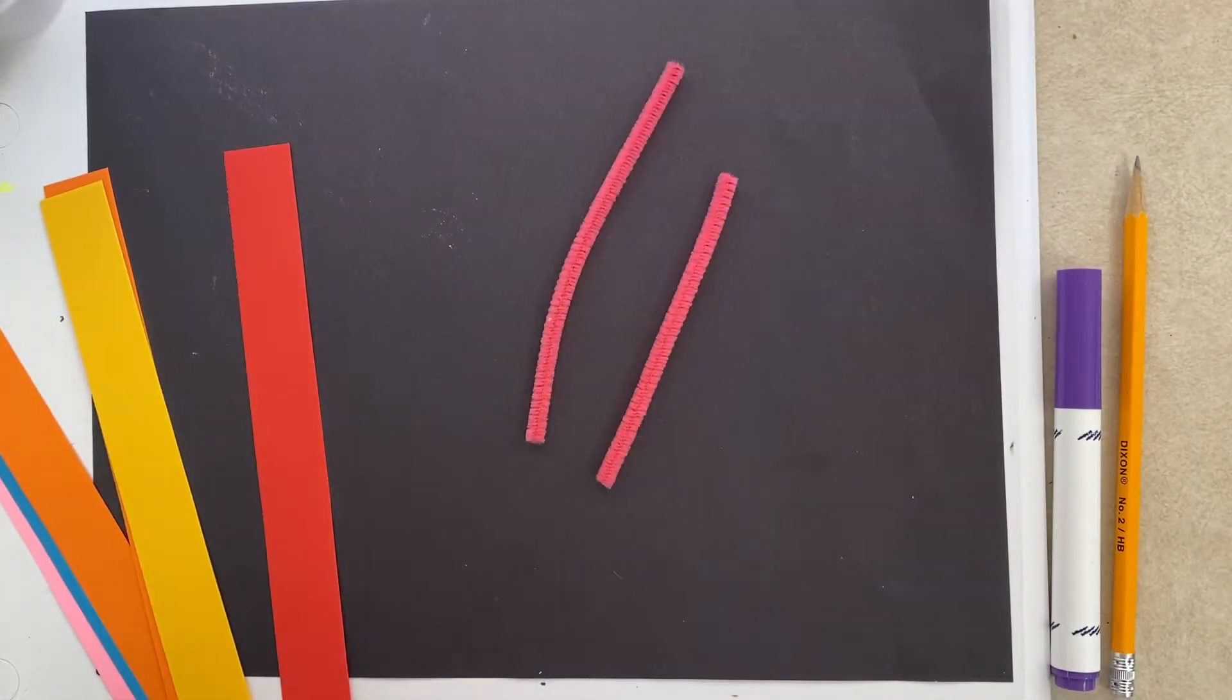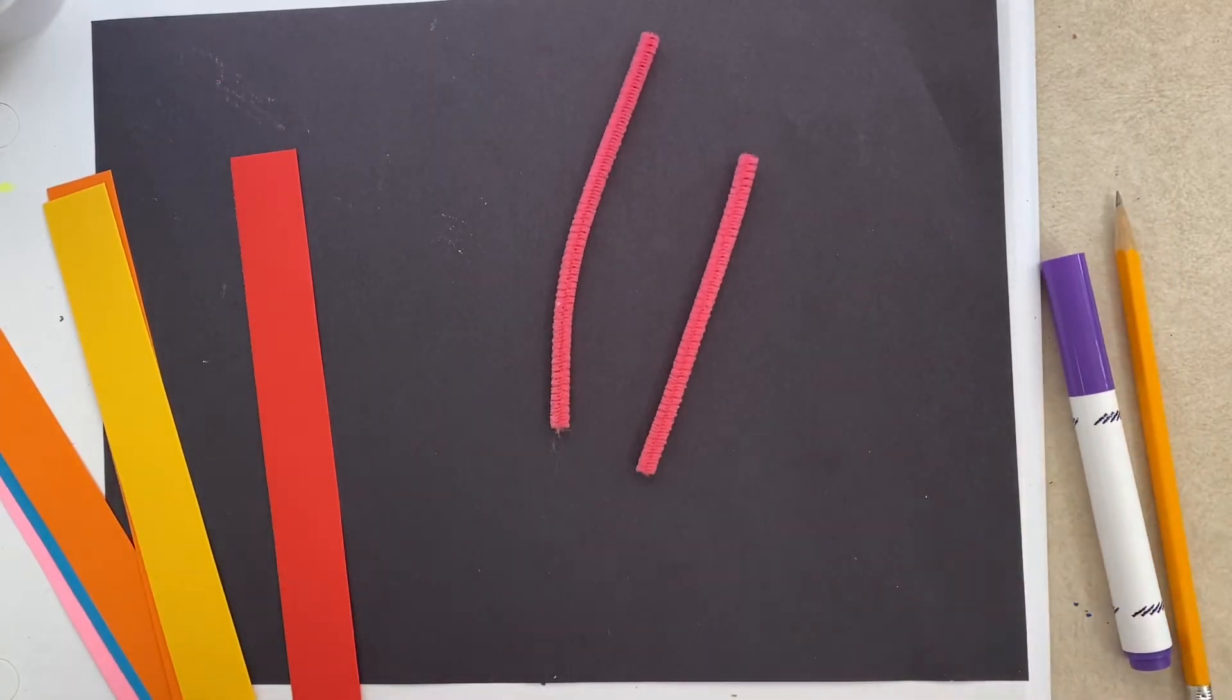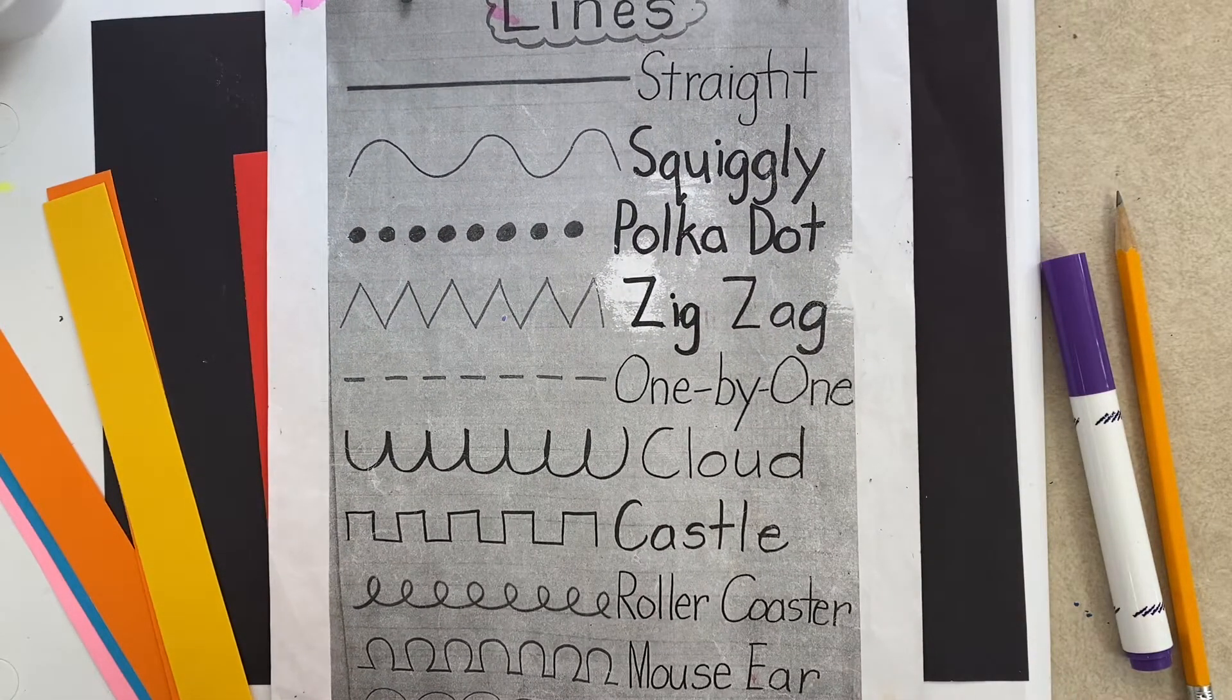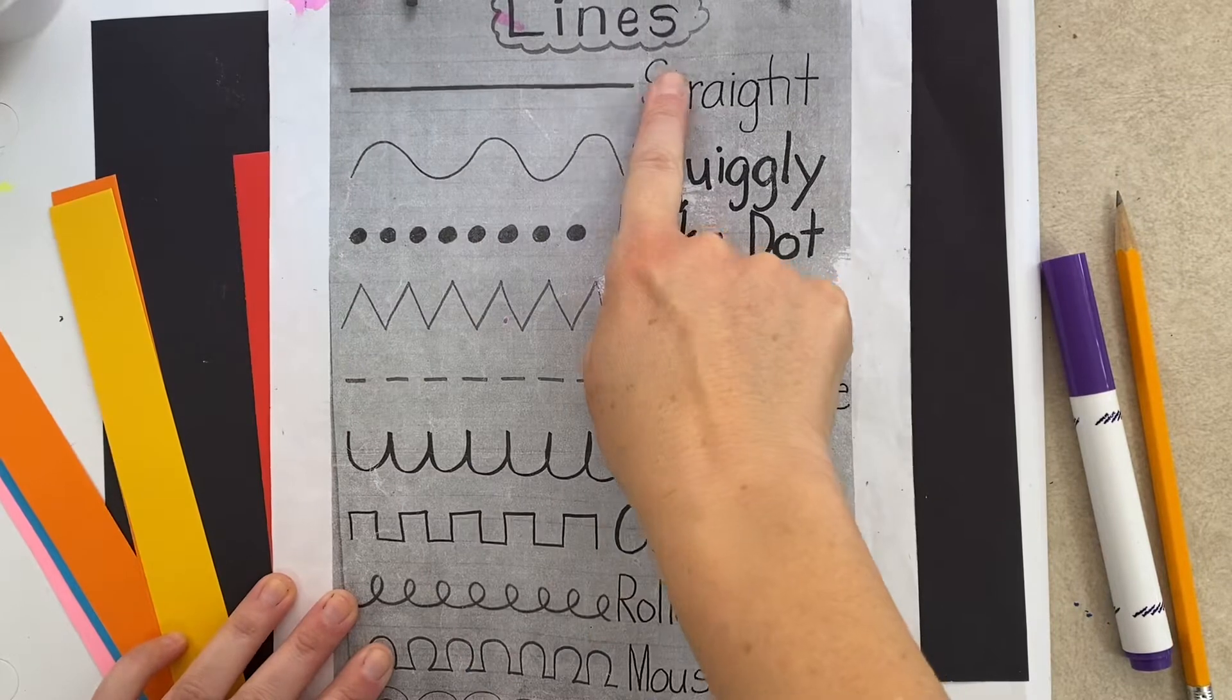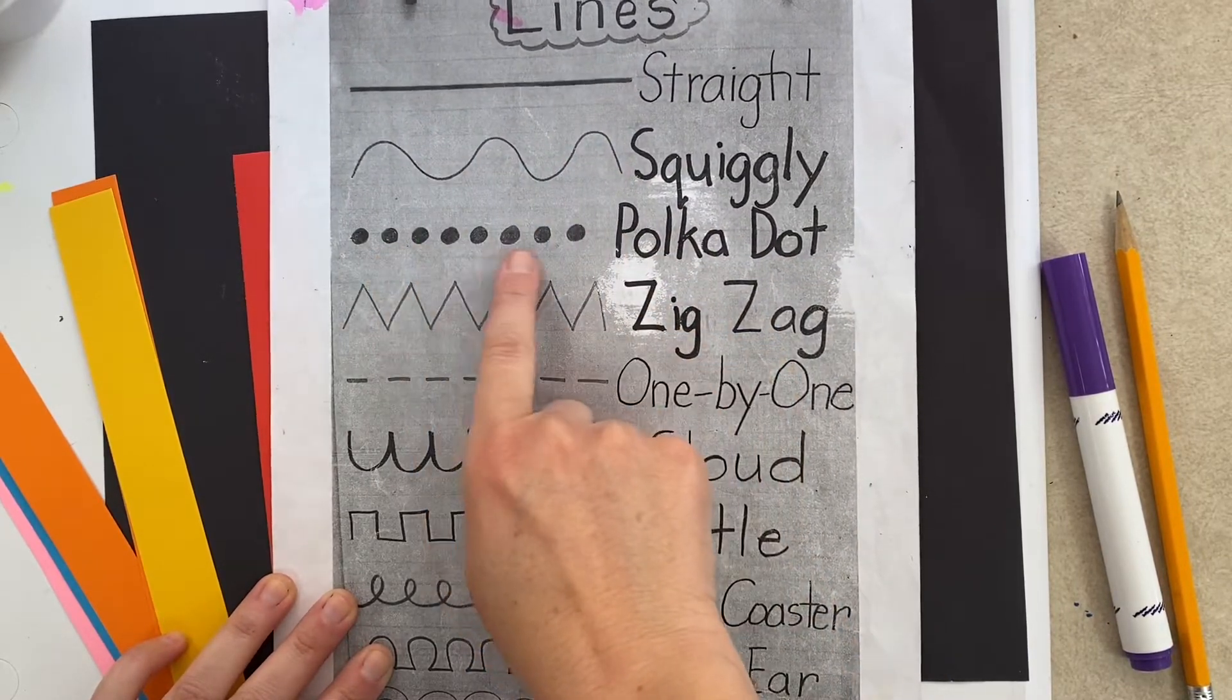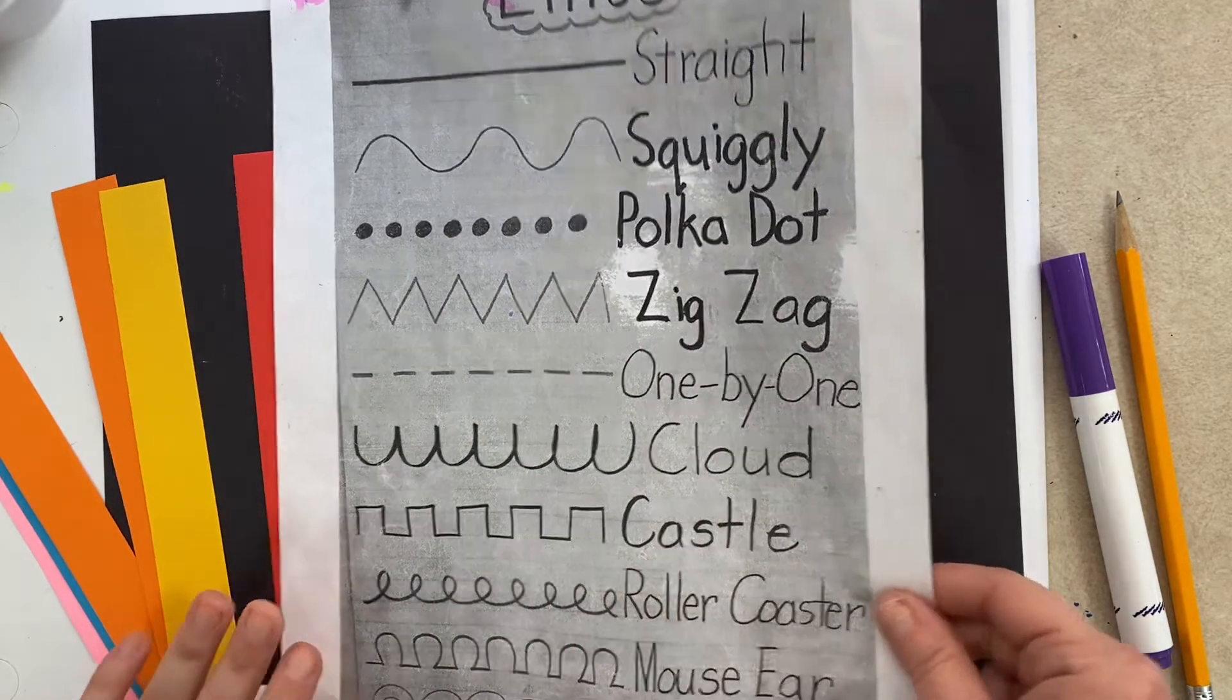Hello my little artists, today we're going to be using pipe cleaners, strips of paper, a marker and a pencil to make some lines. I love lines and in art we've been talking about them. Look at all the lines on this paper. We are going to make some today. Lines can be straight, they can be squiggly or wavy, they can be polka dotted, zigzag, loop-de-loop and lots more. Let's make some with our materials.